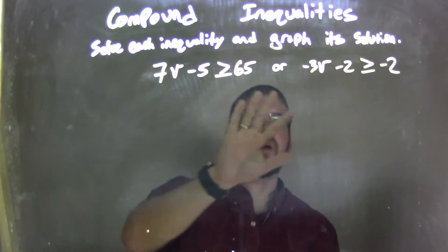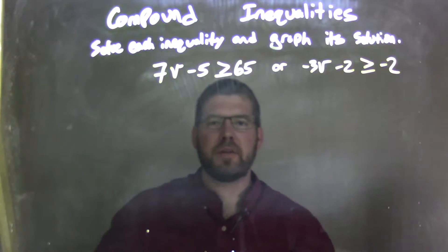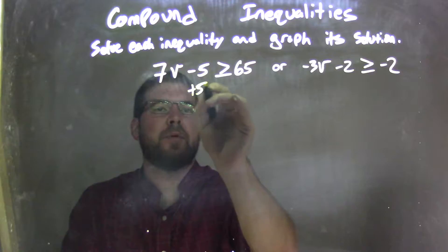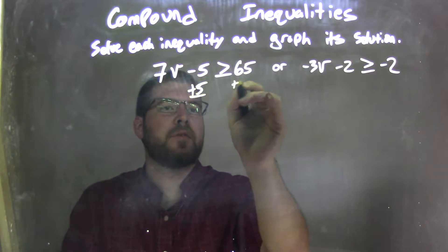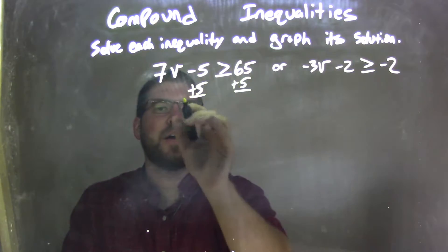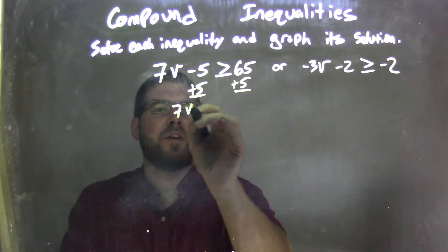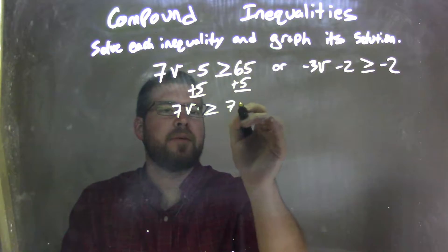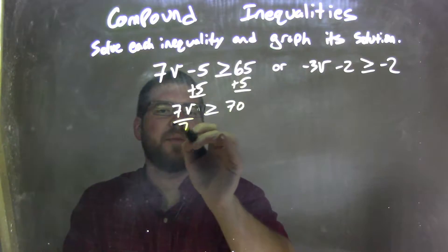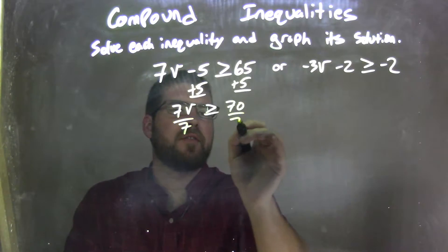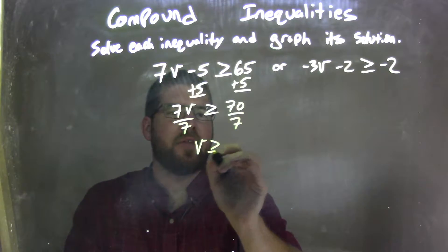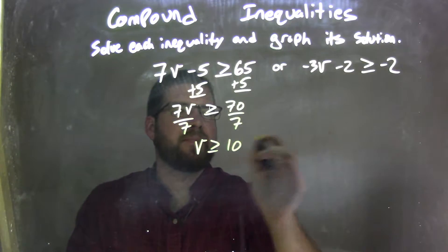With an 'or' separating them, we need to solve each inequality individually. So I'm going to add 5 to both sides here, giving me 7V is greater than or equal to 70. Then I'm going to divide both sides by 7, giving me V is greater than or equal to 10.